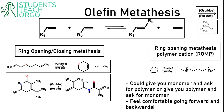Olefin metathesis is this reaction shown right here in this box. This is a good blueprint — if you can remember what's in this blueprint, you should be able to find your way through any one of these questions. The reagent used for olefin metathesis is this Grubbs ruthenium catalyst. If you remember in our first video about organometallic complexes, we used this ruthenium catalyst as an example for electron counting.